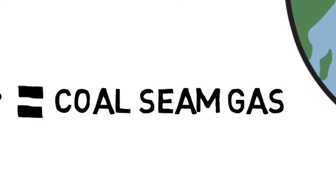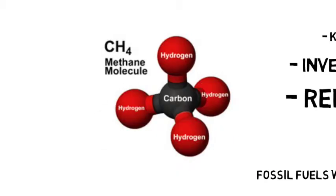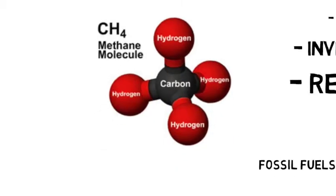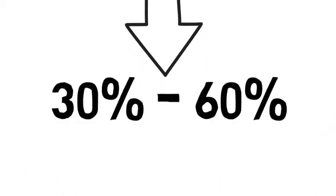Chemically, conventional natural gas and coal seam gas are similar, but coal seam gas has a higher percentage of methane. Humans discovered that coal seam gas produces 30 to 60% less emissions compared to coal-fired power.